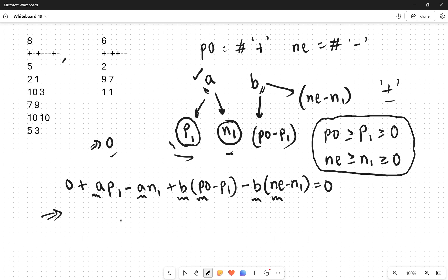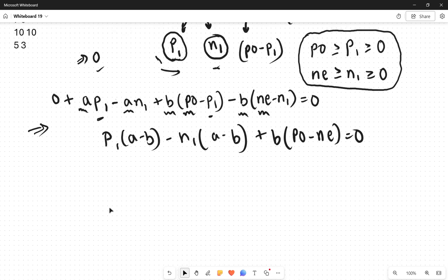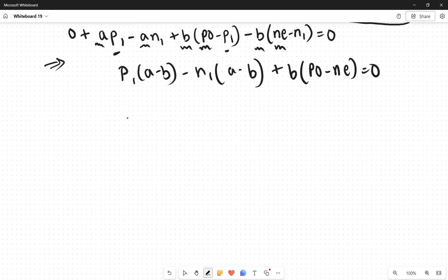Here what I can do is club p1, so p1 into (a minus b) minus n1 into (a minus b) plus b into (PO minus NE) equals 0. We can see that (a minus b) into (p1 minus n1) equals b*(NE minus PO) divided by (a minus b).